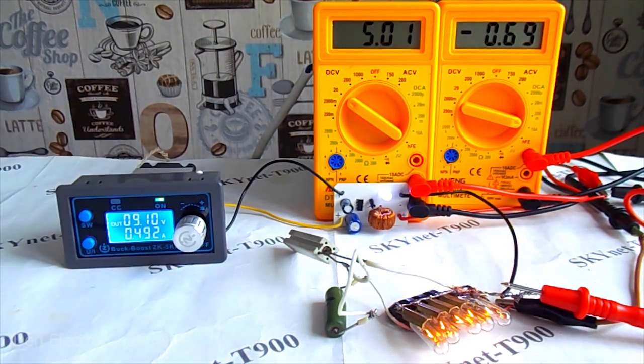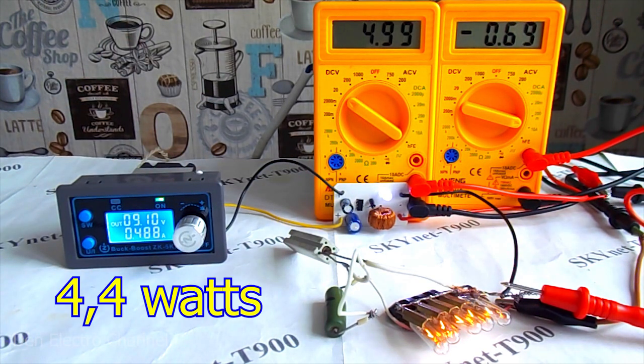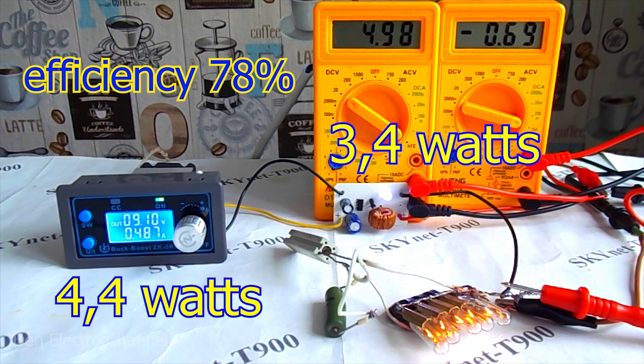Now I lower the input voltage to 9 volts. The current at the input is almost half an ampere. Multimeters show that the voltage and current have become slightly less.